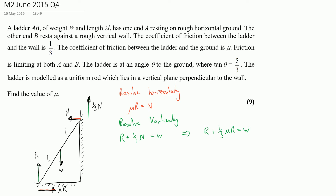My final step is to take moments. After resolving horizontally and vertically, there's really only one thing left we can do and that is to take moments. There are lots of different options for where we can take moments. Personally, in ladder questions I always like using point P, which is vertically above the bottom of the ladder and horizontally from the very top of the ladder, so I'm going to take moments at P.